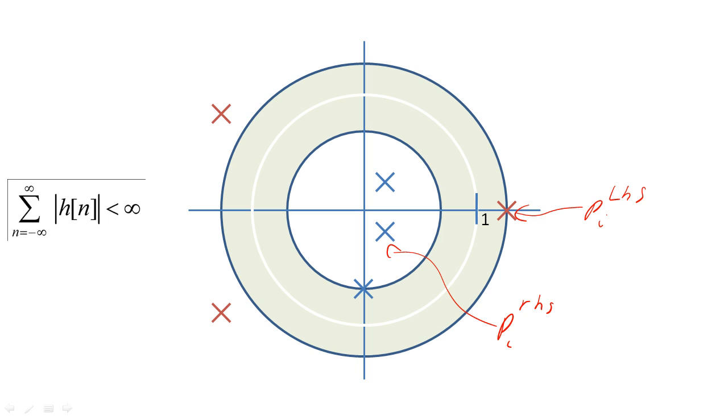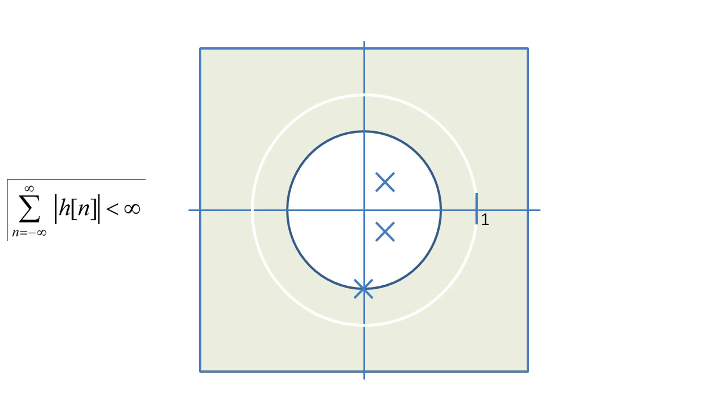If the system is causal, like most of our systems will be, all poles in the system must be inside the unit circle.